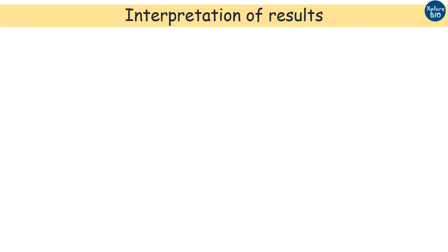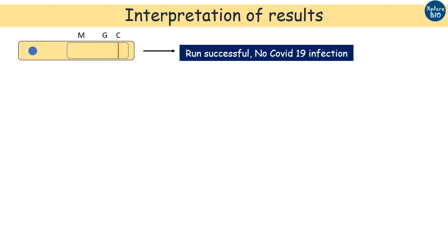Now how to interpret the results? If only a line appears in the control, it means the run is successful and the sample does not contain antibody against COVID-19, which means that the patient is not infected.